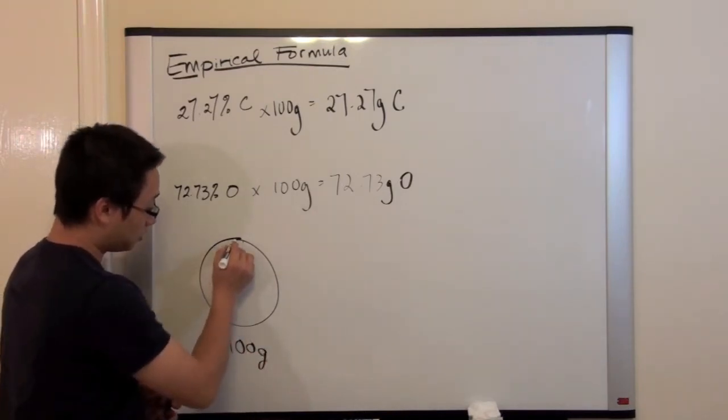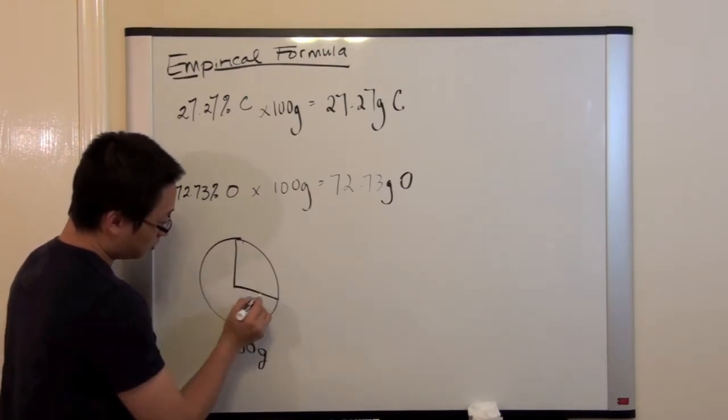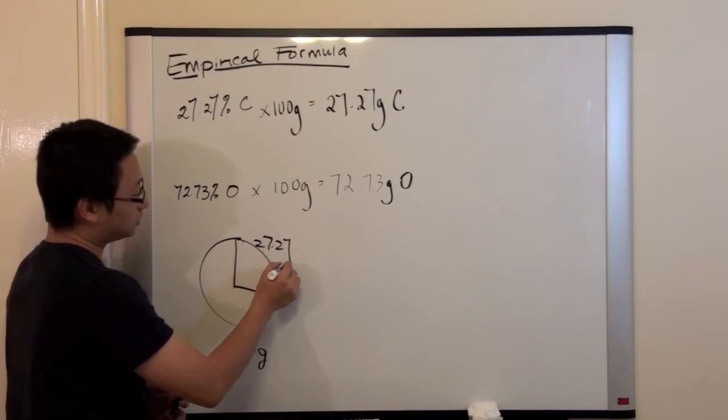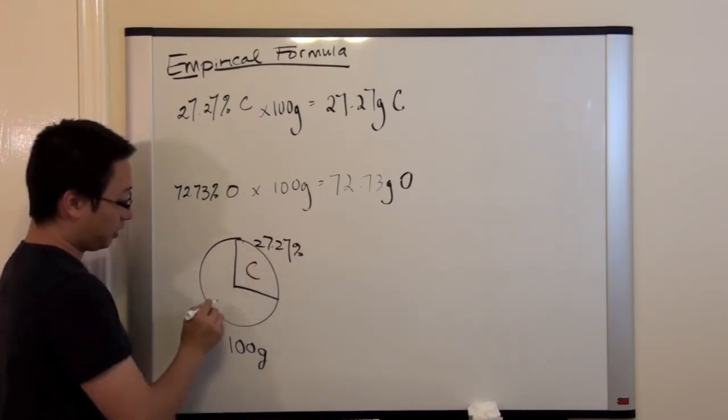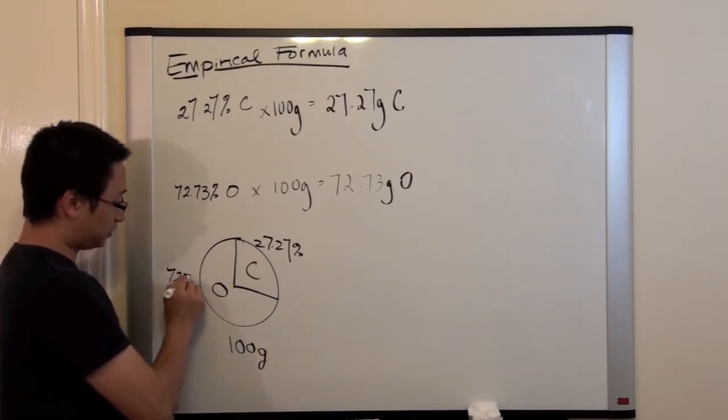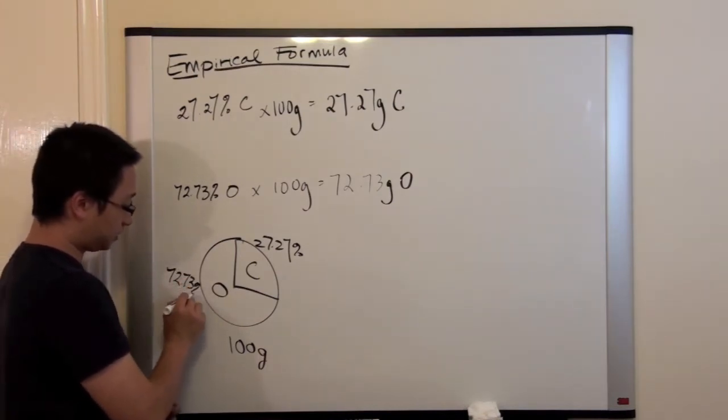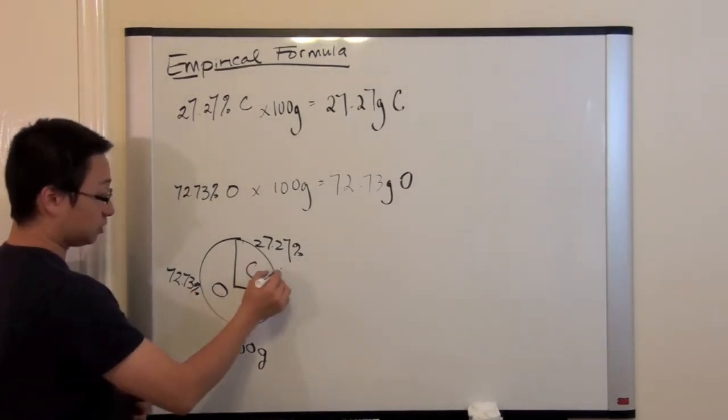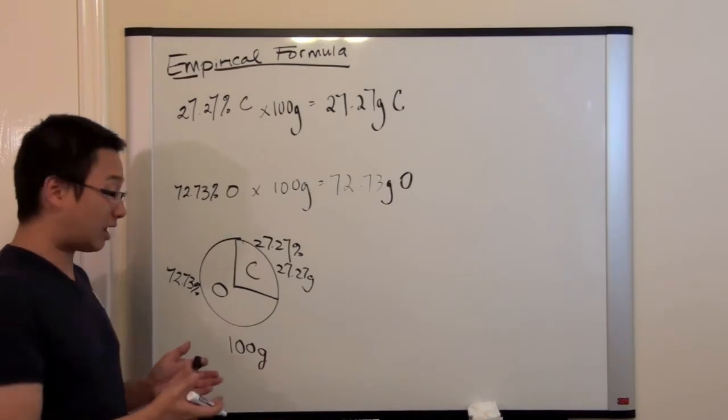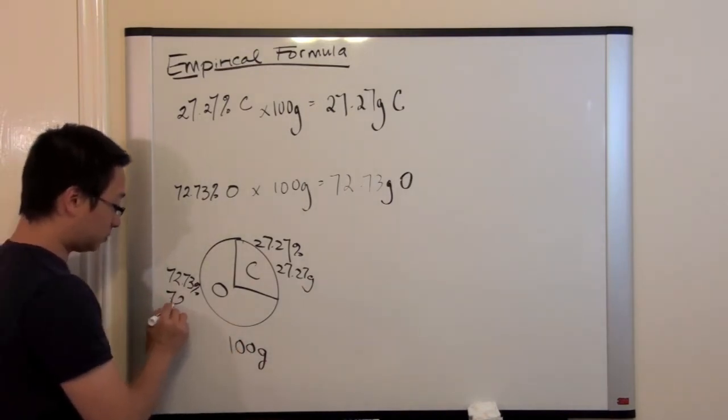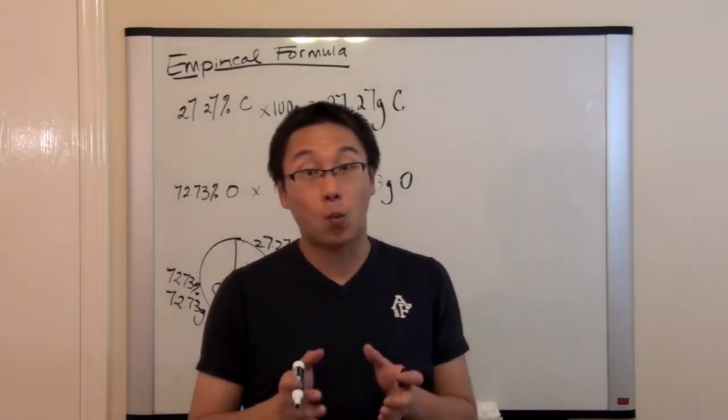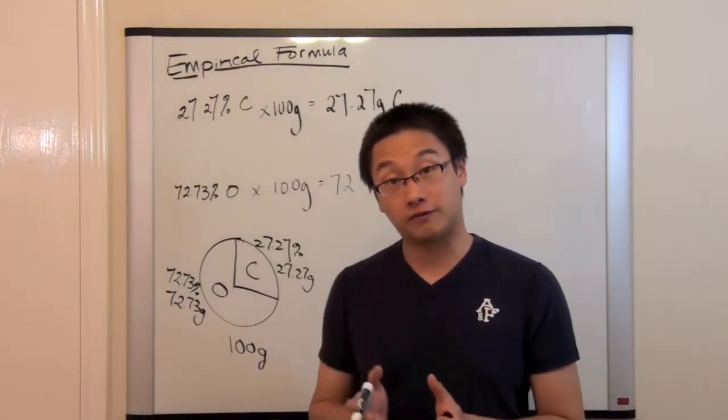So about 27 percent, 27.27 percent of that is for carbon. And then oxygen would occupy the remaining 72.73 percent. Or another way to say it is 27.27 grams since it is out of 100 grams or 72.73 grams. So hopefully you understand why we use 100 grams at the very beginning.